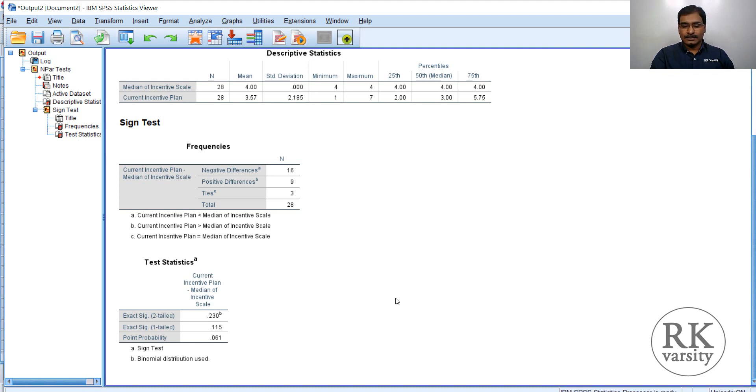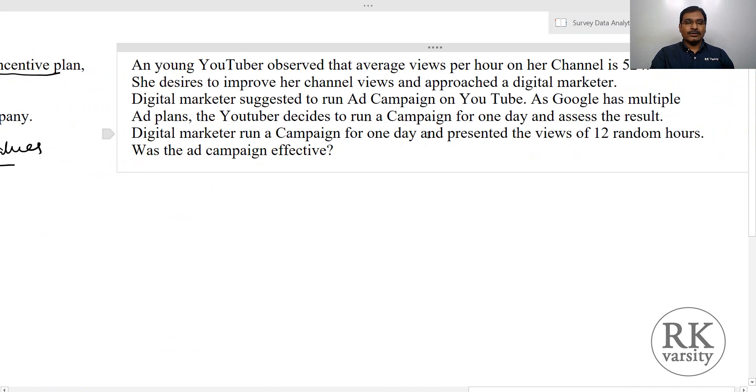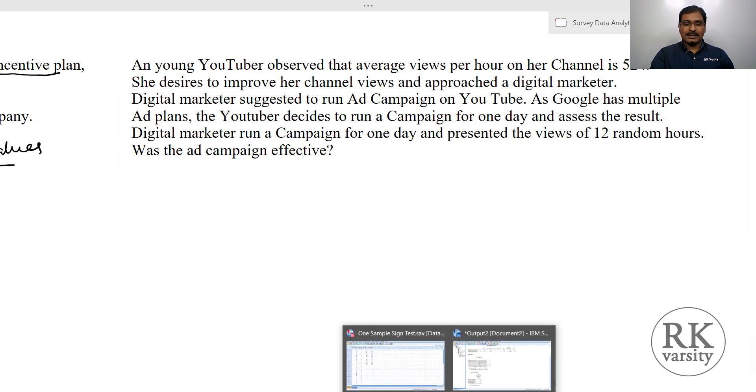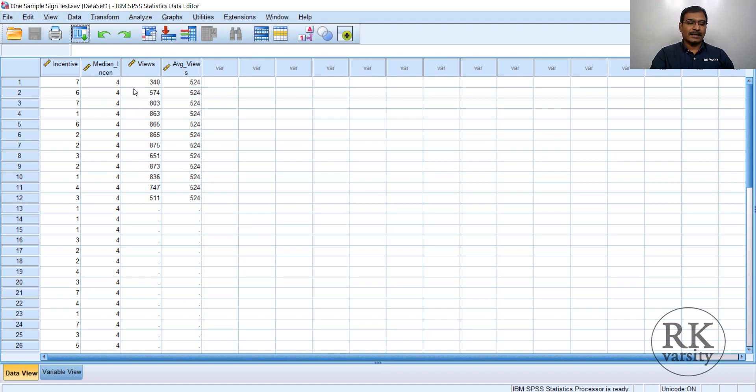Now we look at the second example. What our second example says is, a running YouTuber observed that the average views per hour on her channel is 524. She desires to improve her channel views and approached a digital marketer. The digital marketer suggested to run ad campaign on YouTube as paid campaigns. As Google has multiple ad plans, the YouTuber decides to run a campaign for one day and assess the result. If it is working, then she may plan for additional, otherwise not. For this purpose, they run a campaign for one day and randomly collected views for 12 hours in a day. So total 24 hours, from that they randomly choose 12 hours and the data is here. Here we have views per hour, randomly chosen hours. Here we have 12 hours and average views.